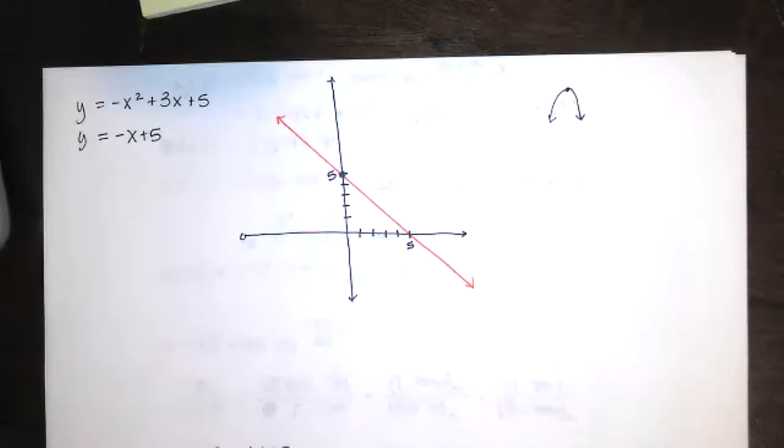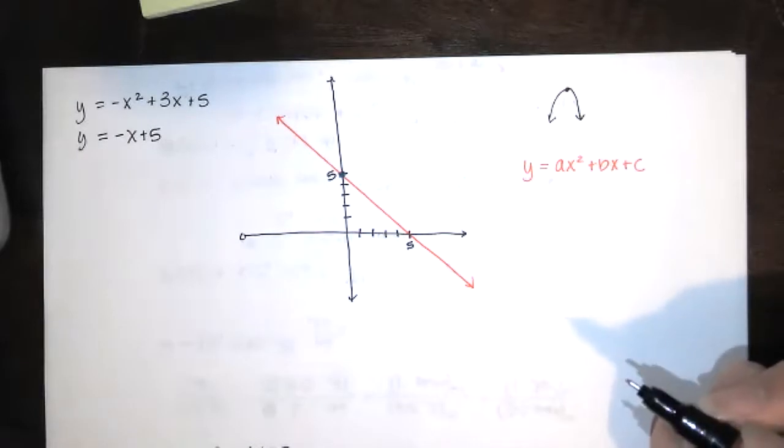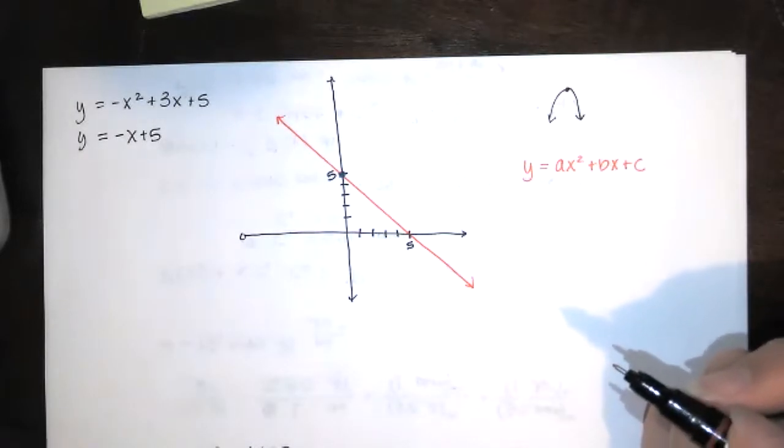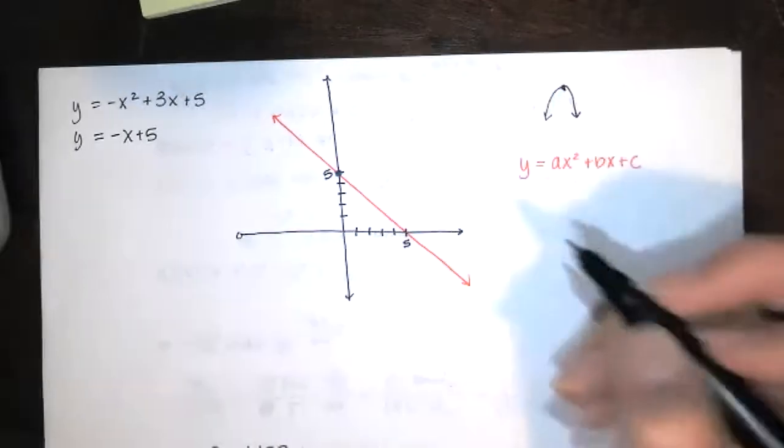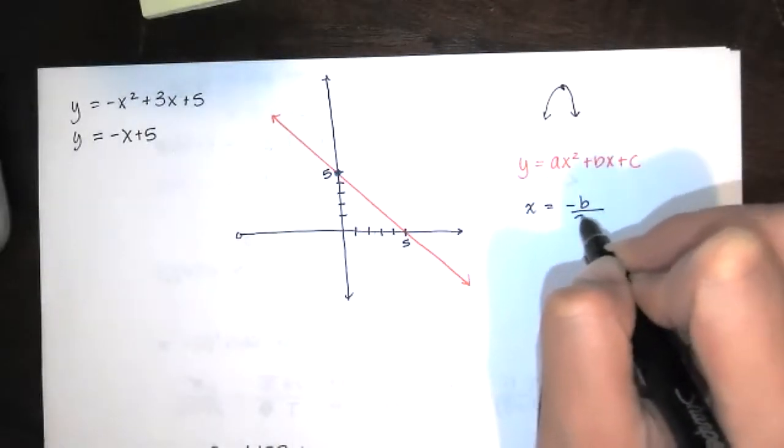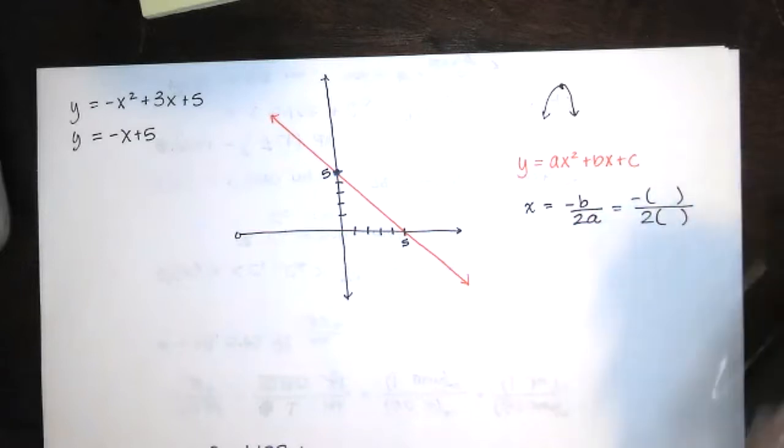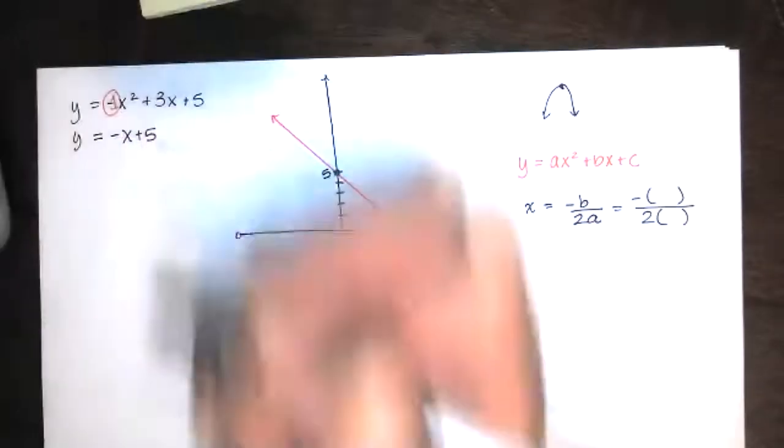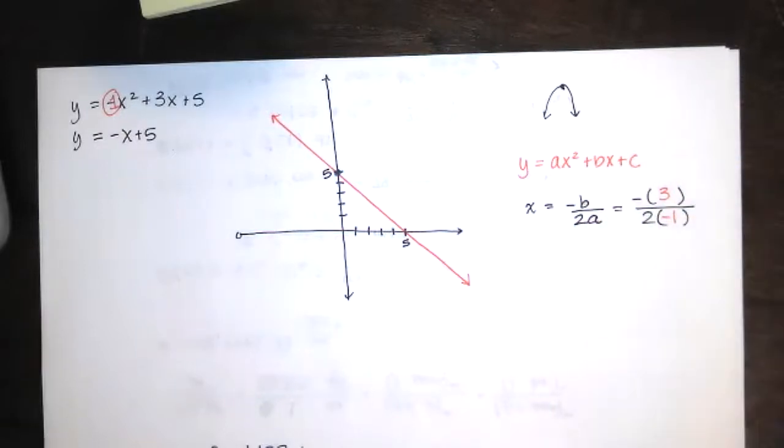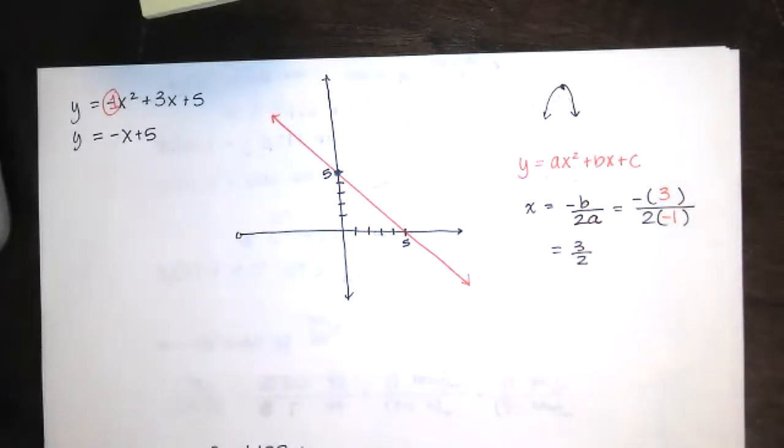Now, to find the vertex, if you have y equals ax squared plus bx plus c, where a, b, and c are constants, and of course a is non-zero, the x value where that vertex occurs is at x equals negative b over 2a. We're just going to substitute in our b and our a. b is 3. a is the number in front of the x squared, which is negative 1. So, we have negative 3 over negative 2, which is 3 over 2, or if you prefer 1.5.